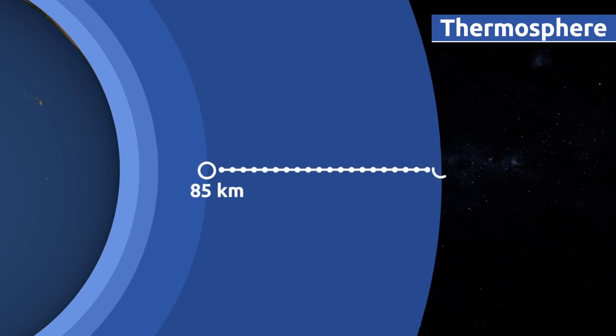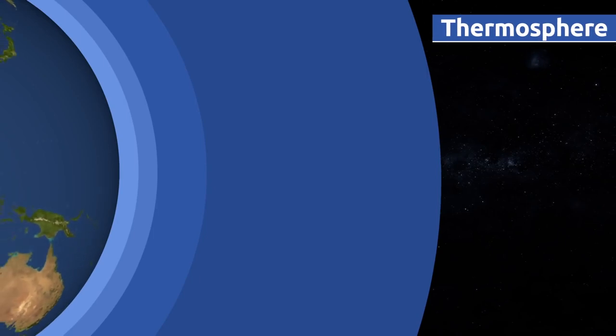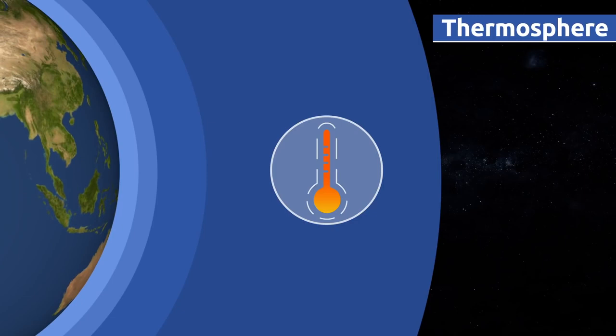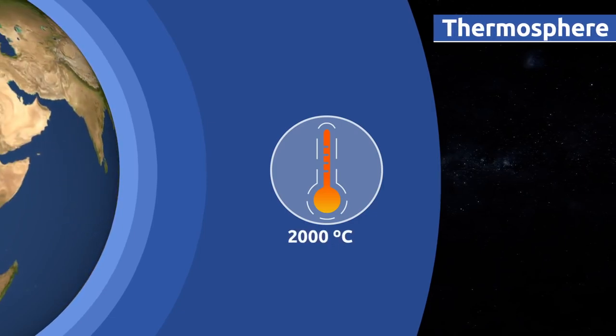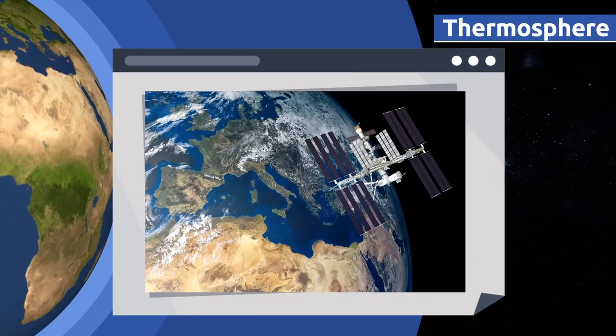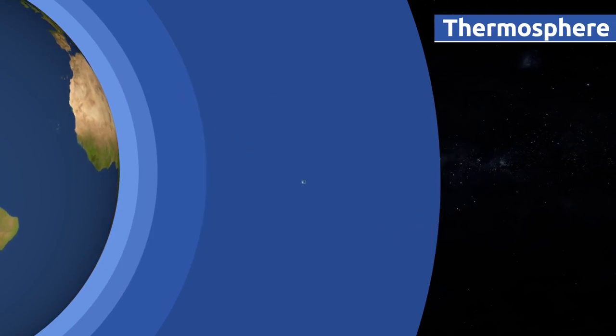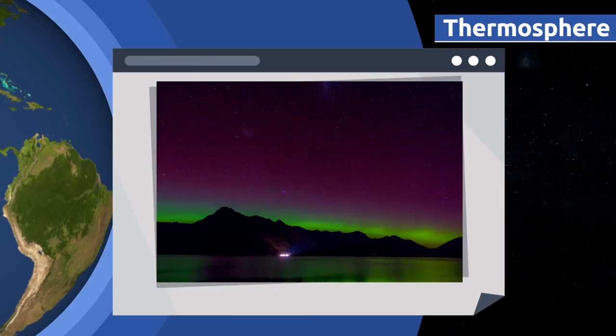The thermosphere extends to an altitude of 85 to 500 kilometers above sea level. This layer is the warmest of all five layers. Air temperature on the surface of the Earth is kept constant thanks to the thermosphere. In this layer, temperatures can rise to more than 2,000 degrees Celsius. The International Space Station orbits the Earth within the thermosphere. Impressive natural phenomena, like the northern and southern lights, occur in the thermosphere.